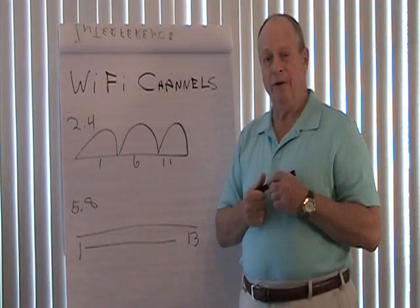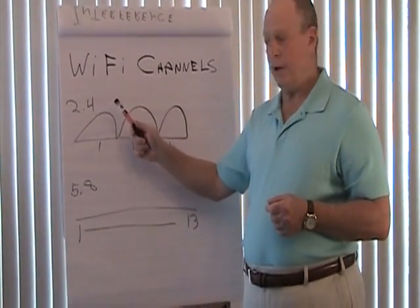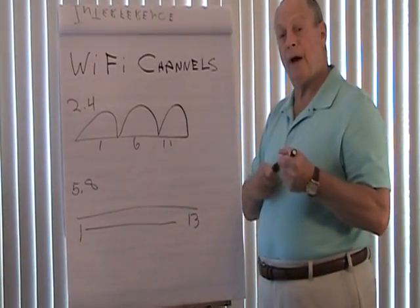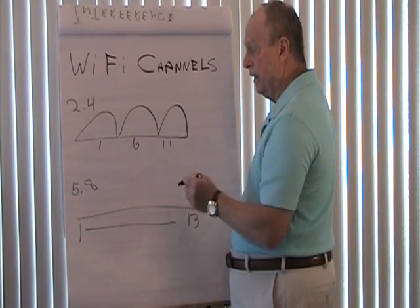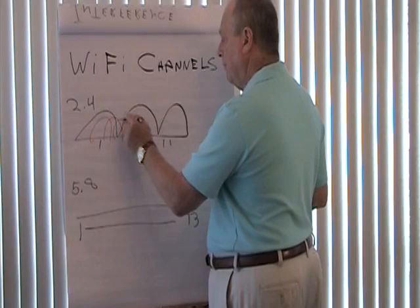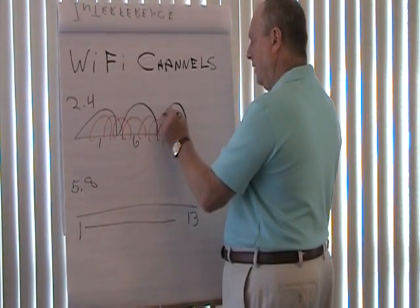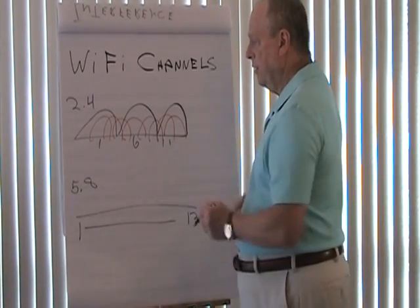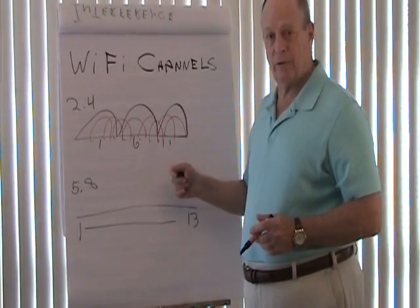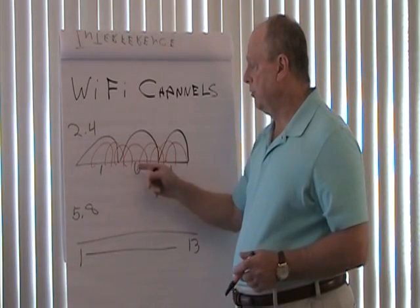Wi-Fi is broken up into different channels depending on the frequency. In 2.4 GHz, we have 11 channels, 1 through 11. The true only non-overlapping channels are 1, 6, and 11. Channel 2 overlaps a little bit, Channel 3 overlaps, 4, 5, then 6 is here, then 7, 8, 9, 10, and of course Channel 11.